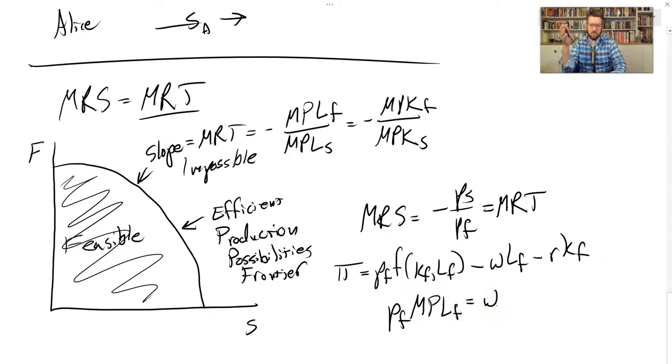Remember this condition? It said that if you hire one more worker, we want the extra revenue they bring in to exactly equal the cost of that worker. So we know this is true. And by the same argument, we know that the price of shelter times the marginal product of labor for producing shelter is also equal to the wage rate. We can combine these two equations.